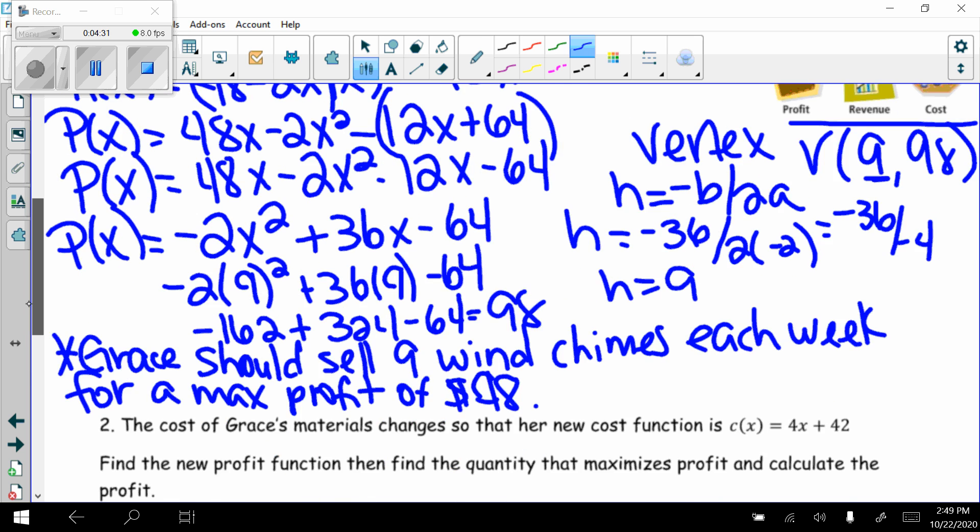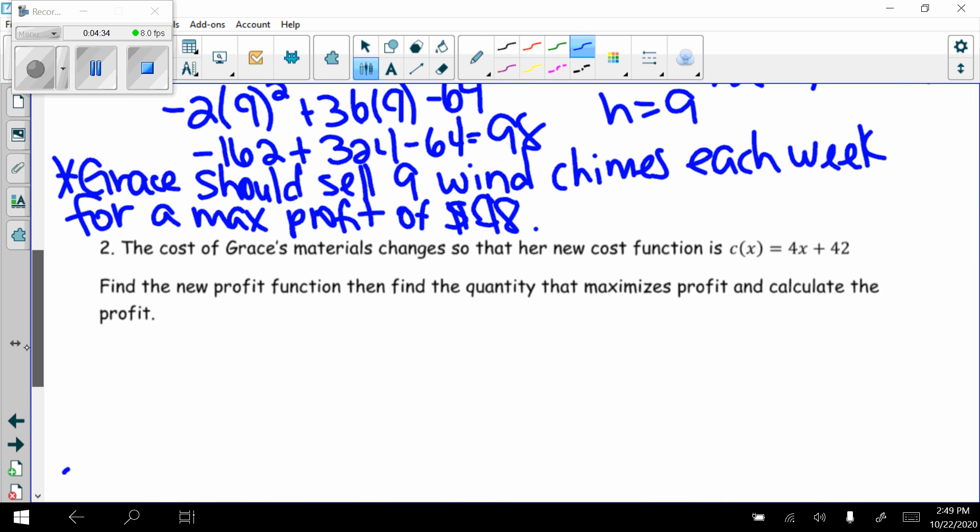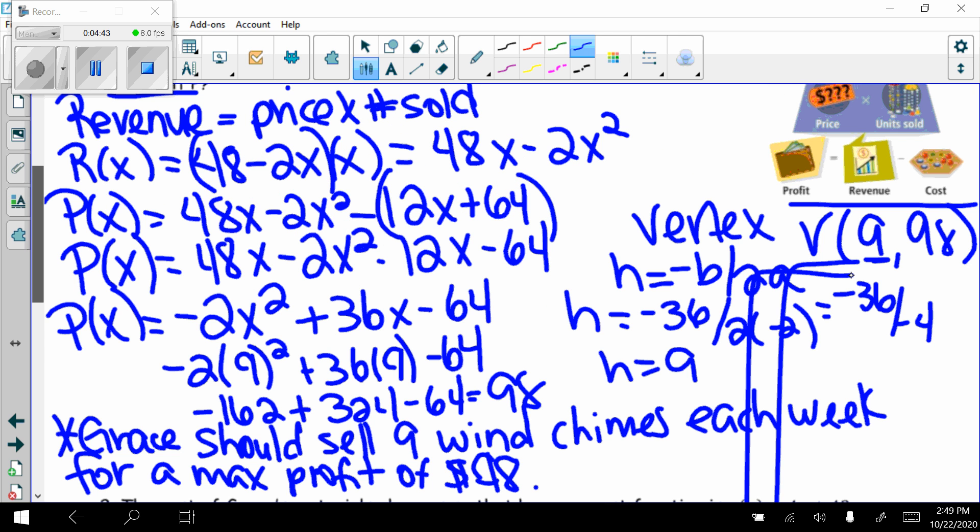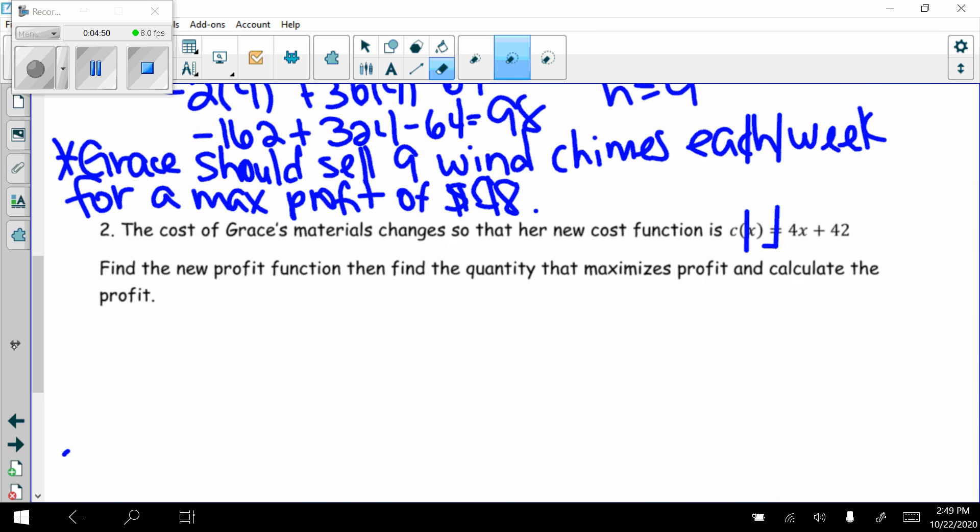So now let's look at part 2 to this question. It says, now the cost of Grace's materials changes so that her new cost function is this. So her new cost function is this. Find the new profit function, then find the quantity that maximizes profit and calculate the profit.